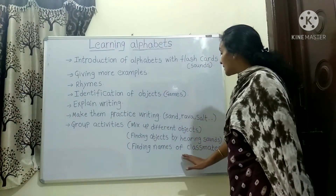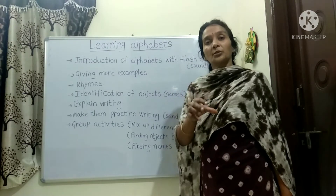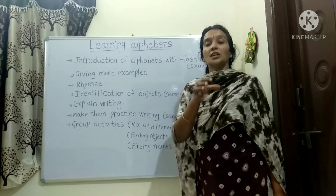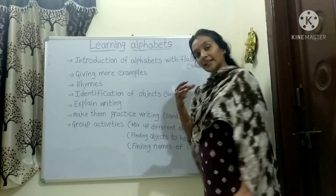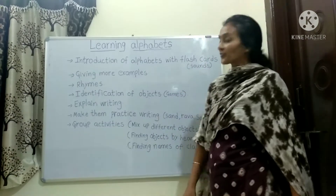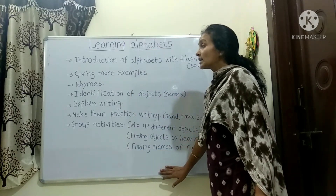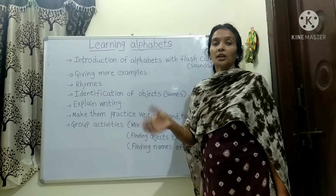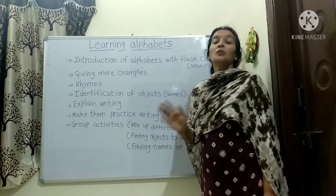Then, finding names of classmates — this is also one more fun activity. Whatever alphabet we introduce in the class, we ask them which classmates' names start with the sound of that letter. That is also one more fun way for them to learn the sounds, and it will be easier for them. These are the steps we follow in the class. For each and every alphabet, it takes one week of time to identify the alphabet, learn the sound, and to write — one week of time for the pre-primary grade.